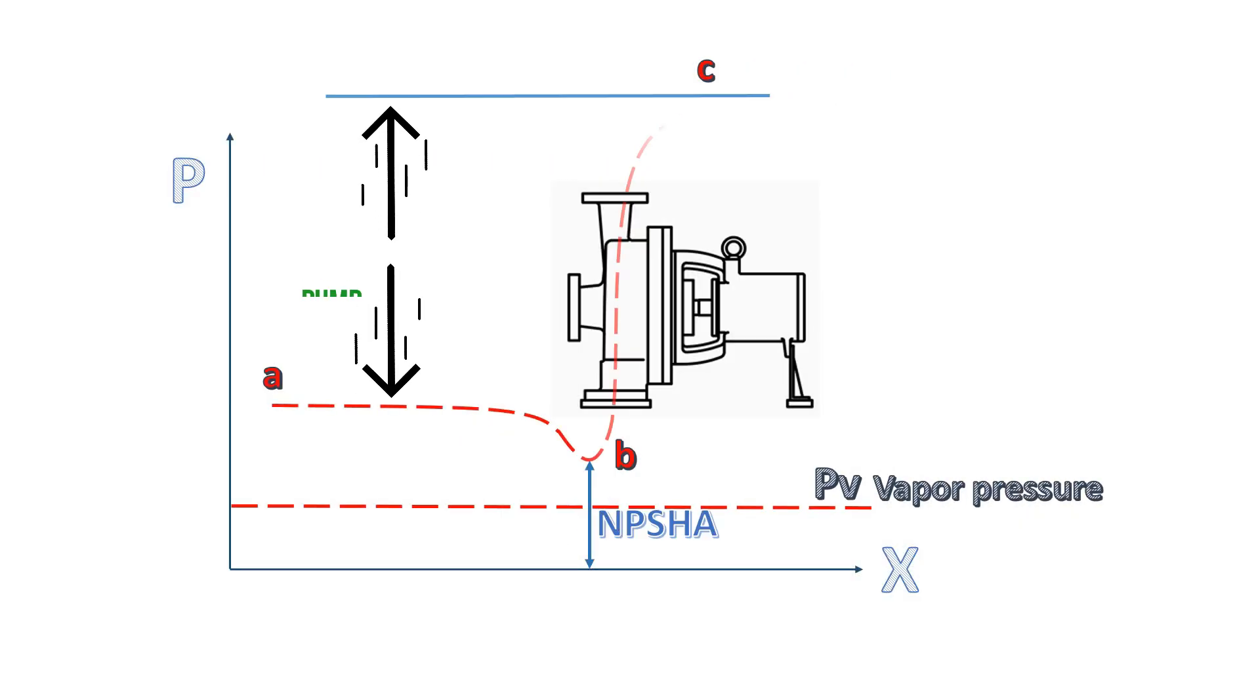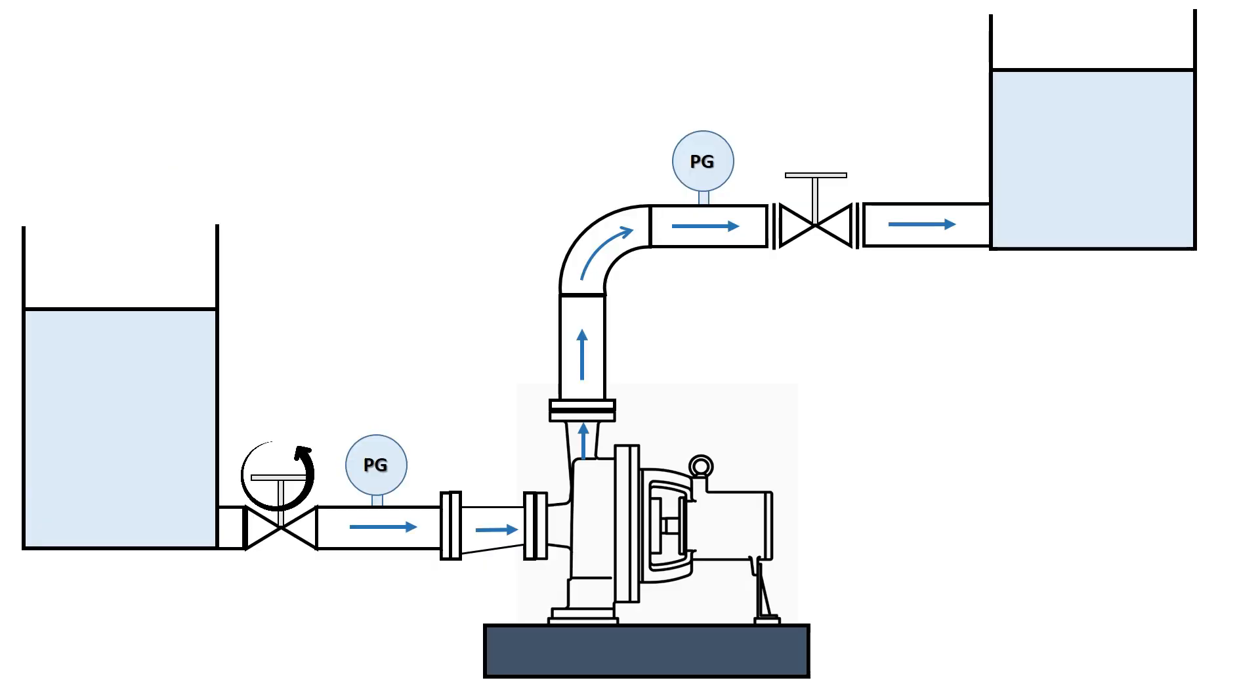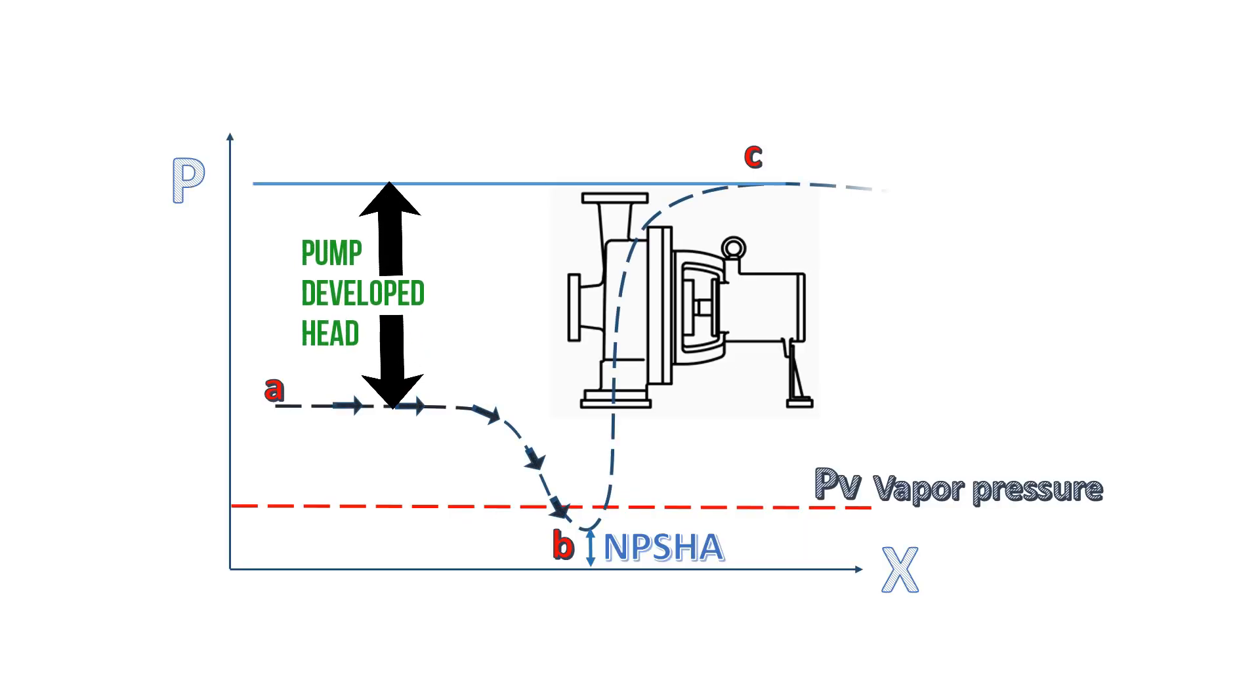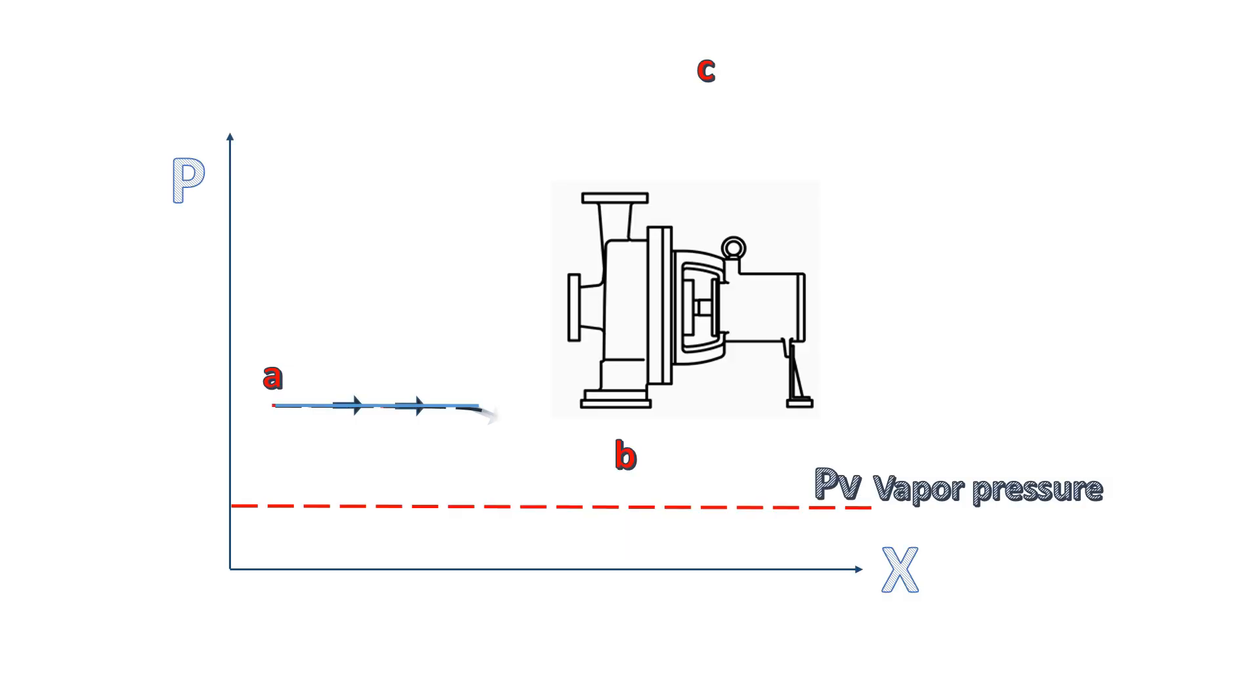However, pump developed head and flow remains constant until a point where net positive suction head available reduces below vapour pressure. After each throttling of suction valve, pump manufacturer notes down the total head developed by the pump and net positive suction head available. The pump manufacturer repeats this step until a point where the total developed head decreases by at least 3%.